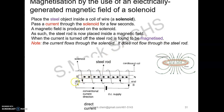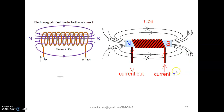We are also going to take note of which end of the steel bar becomes a north or south pole. Where the current enters, that end becomes the south pole. Where the current leaves, that end becomes the north pole. To summarize: current in — south pole; current out — north pole.